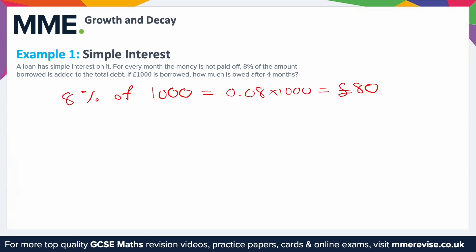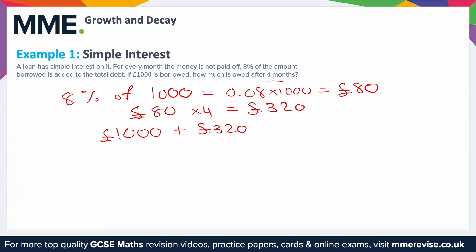Since it's simple interest, the exact same monetary amount is added every single month. In this case it's for four months, so you've got 80 pounds times four, which is 320 pounds. In total they owe 1,000 pounds plus 320 pounds, which is 1,320 pounds.